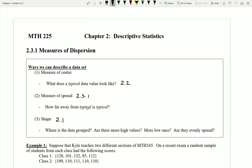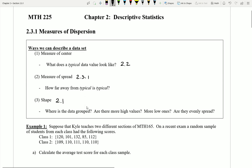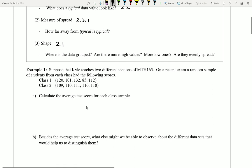How far away from typical is typical? To get a sense of what we mean by this, let's take a look at example number one. Suppose that I teach two different sections of a particular class, maybe Math 165, and on a recent exam, a random sample of students from each class had the following scores. So I randomly select five people from each class, and these are the scores that I get.